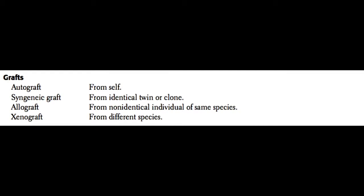Next we're going to talk about organ transplantation. Depending on where the organ graft comes from, it may get a different name. If it comes from oneself — for example, someone takes out their bone marrow and has it reinjected into themselves later — we call that an autograft. If you receive a graft from an identical twin or a clone, we call that a syngeneic graft. If it comes from a non-identical individual of the same species, human to human but not related, we call that an allograft, which is the most common type. A xenograft refers to a transplant received from an animal of a different species.